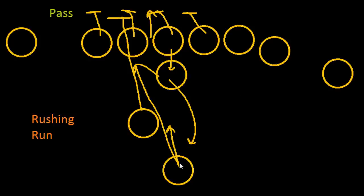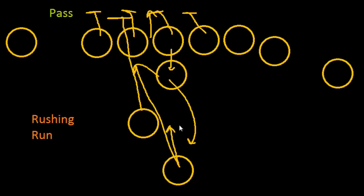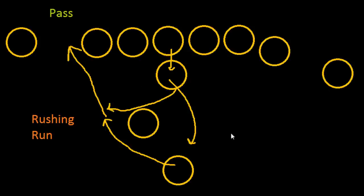The play called by the coach will determine where the halfback runs — straight up behind the line or outside to either side. A related play is the pitch, where instead of handing the ball off directly, the quarterback underhand-tosses the ball to the running back as he heads toward the outside. The running back catches it and keeps going. These are all considered rushing plays.